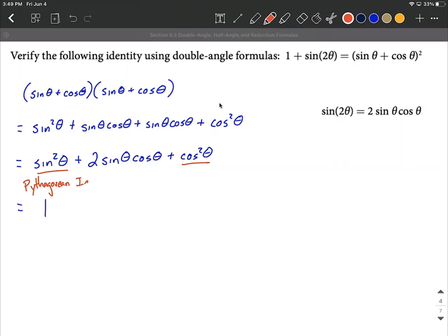Or rather, I probably should call it the Pythagorean identity. Sine squared plus cosine squared equals one. So that's where that comes from. Next, I'm going to go ahead and bring along the plus two sine of theta, cosine of theta from the middle.